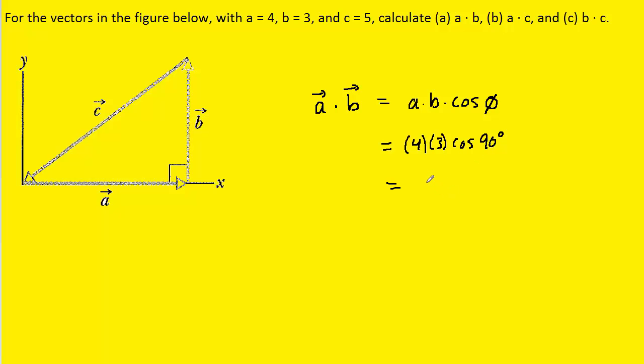If we punch this into our calculators, we're going to get zero because the cosine of 90 is zero. And so this becomes the correct answer to part A.